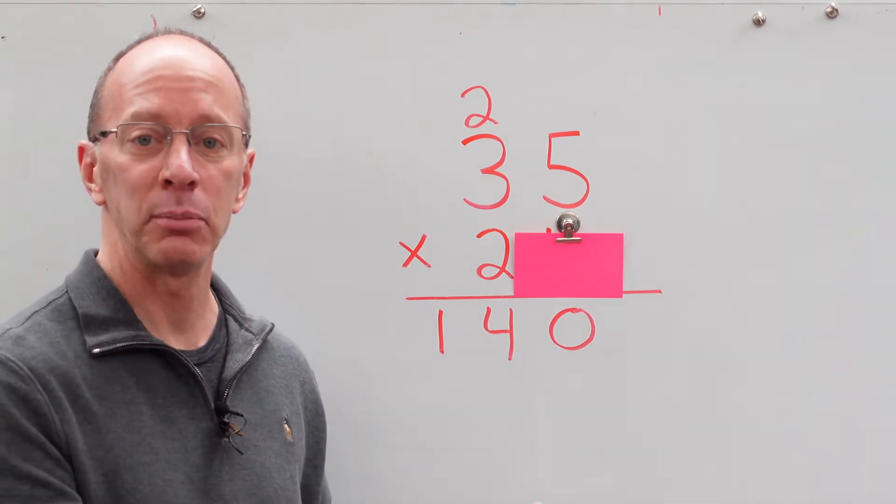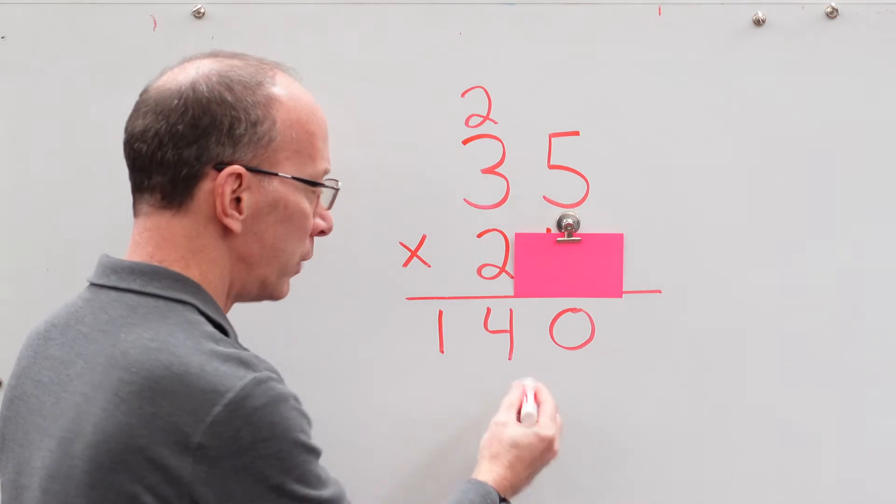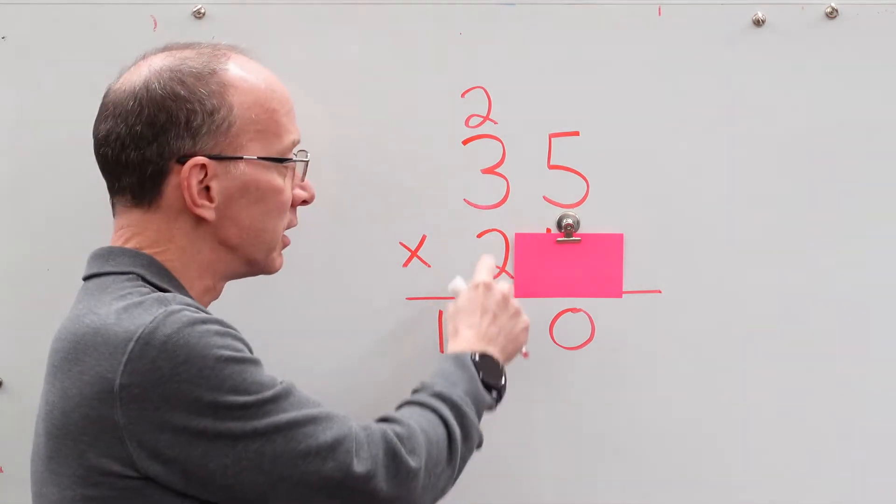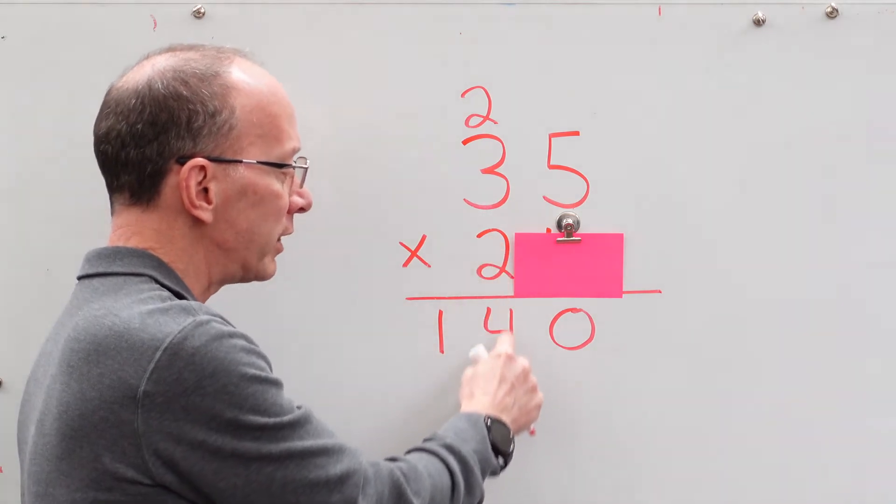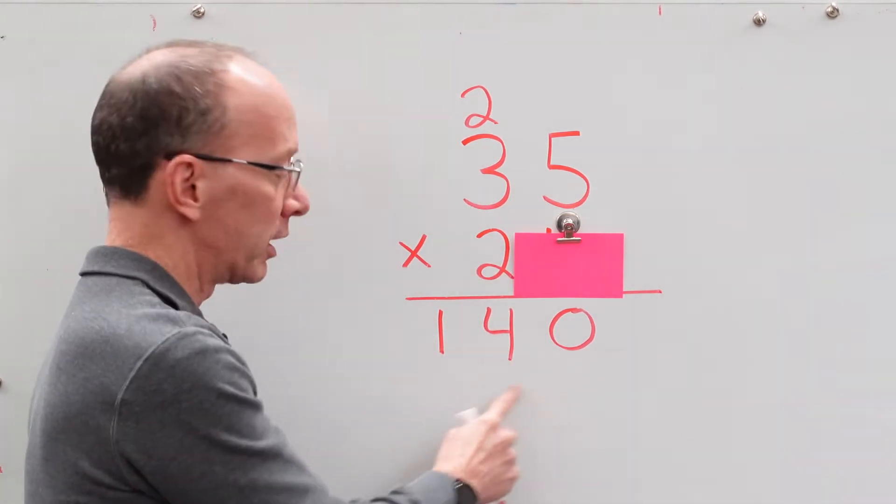We do the same process. 2 times 5, 10. So do we put the 10 here? No. All right, we're dealing with this number here. This is the 10 spot, and so we're going to write that number down here. We're going to start from here. Don't start here. We're going to start in this place.